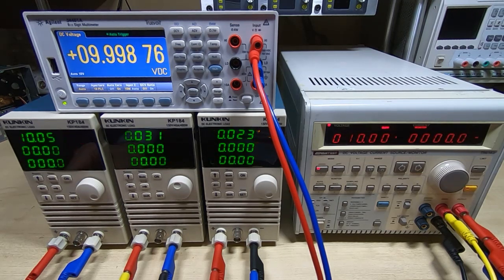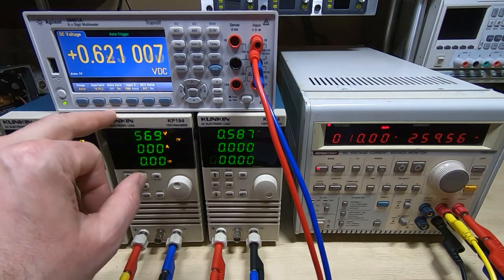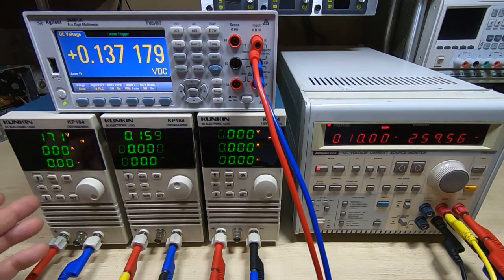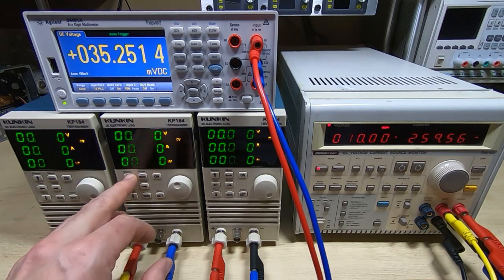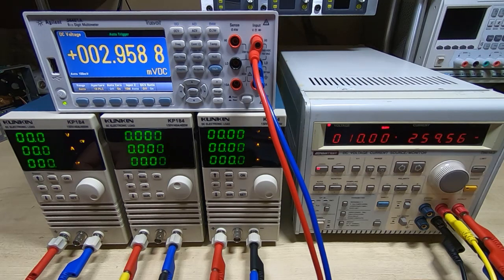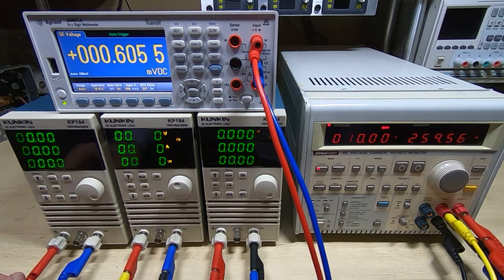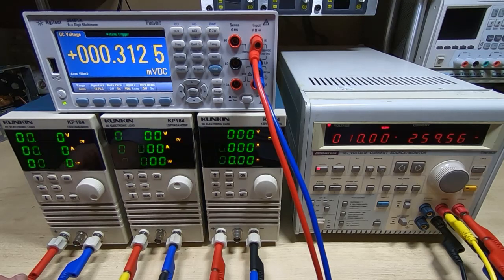So step one, turn the source off and we need to put these into calibration mode. As I said, to do that you turn them off, hold the up arrow, power them back on, and they should come up with the first message on the screen showing that they are in the first voltage calibration point.